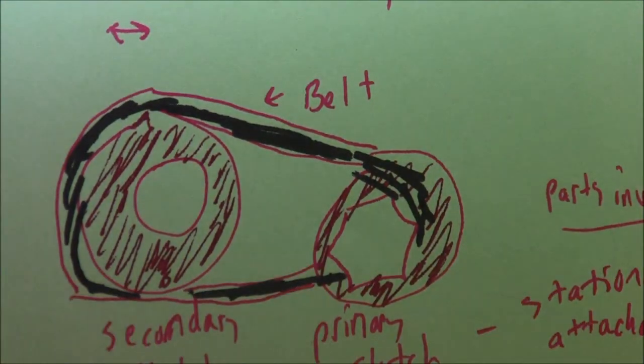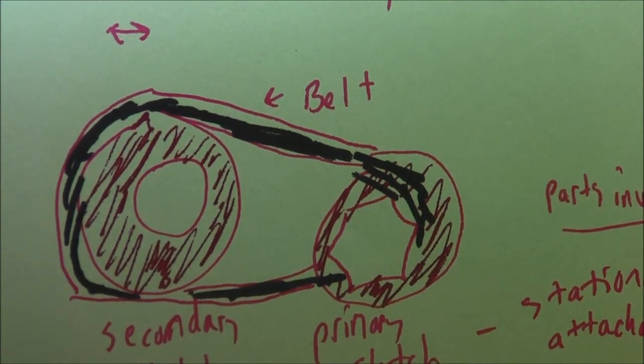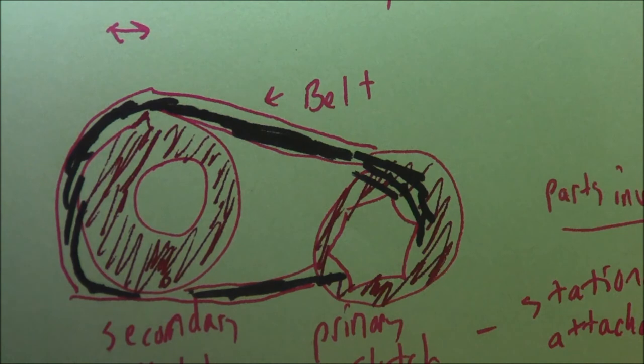The flyweights pivot outward in response to centrifugal force and or hydraulic pressure from the oil pump in the transmission. There are various different ways, even a magnetic one. It's really cool that science has put this into action. People have actually used magnets to do this operation. Just look that up, it's pretty cool.